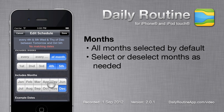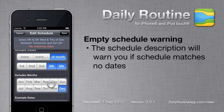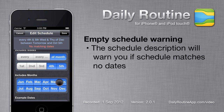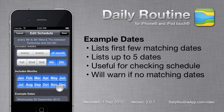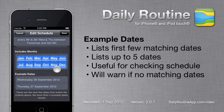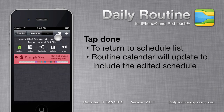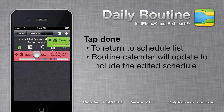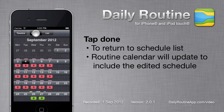Note that it is possible to create a schedule which matches no dates. In this case, Daily Routine will warn us. At the bottom we see a list of the first few dates covered by our schedule. This list will also warn us if our schedule matches no dates. Once we are happy with our schedule, tap the done button, and we see that the list and the calendar are updated with the schedule's new dates.